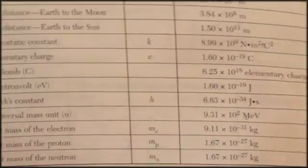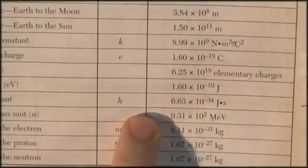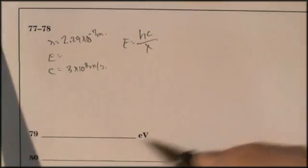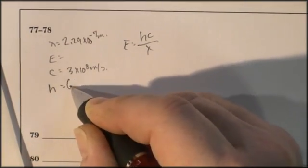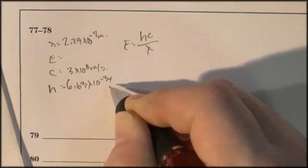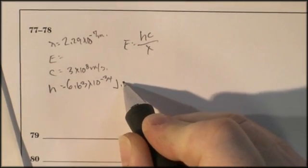And we're going to be told that's 6.63 times 10 to the negative 34 joule seconds. H equals 6.63 times 10 to the negative 34 joule seconds.